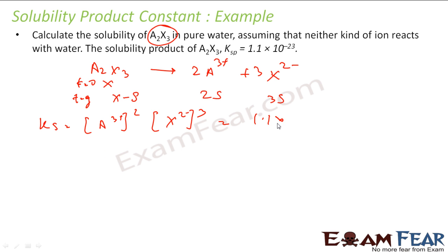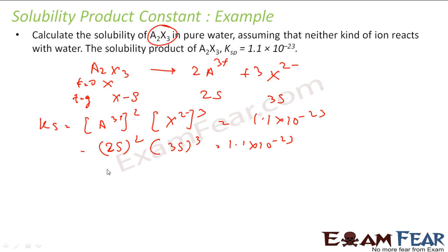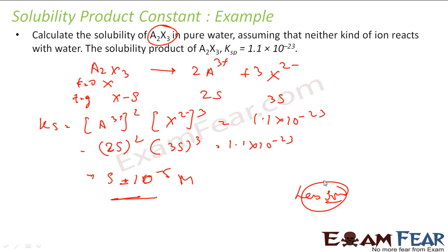Substituting: Ksp = (2S)² × (3S)³ = 4S² × 27S³ = 108S⁵. The given value is 1.1 × 10⁻²³. Solving this gives S equal to approximately 10⁻⁵ M. Since this is less than 0.01 M, the compound is very sparingly soluble — almost insoluble.